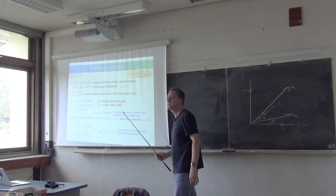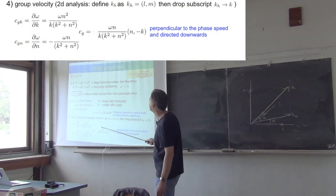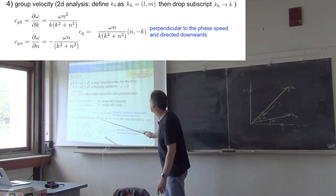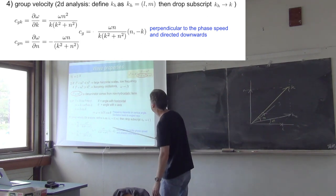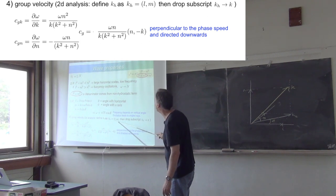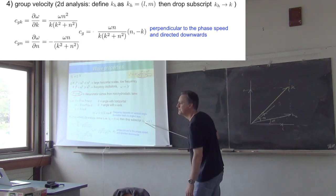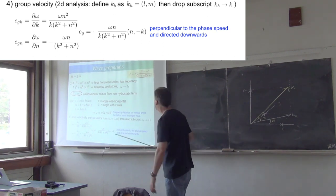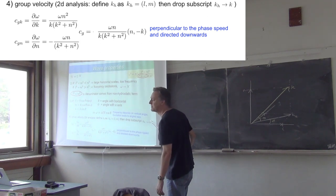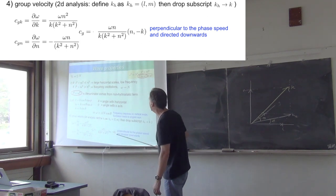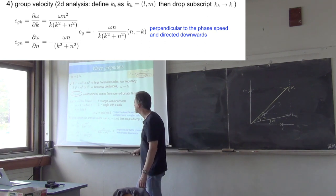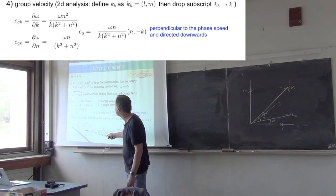We can calculate the group speed by doing a bit of differentiation. Let's say this k_h, which I've drawn on the blackboard, is equal to the vector lm. We'll just drop the h and call that k to save a bit of typing. So k is the horizontal wave number and n is the vertical wave number.